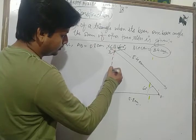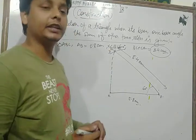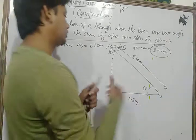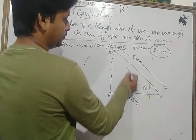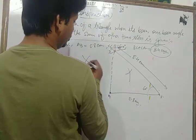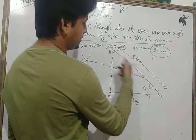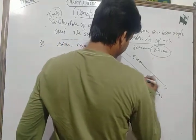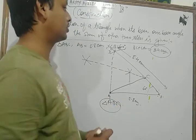Join AD. Now construct the perpendicular bisector of line segment AD. Taking A as center and distance more than half of AD, cut a pair of arcs on both sides of AD. Taking D as center with the same radius, cut arcs intersecting at two points. Join these intersection points and produce — this line cuts ray BX at point C. Join AC. Triangle ABC is the required triangle.